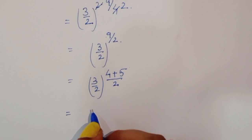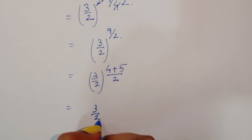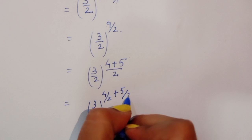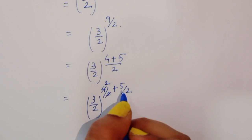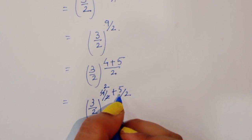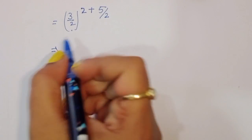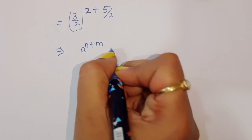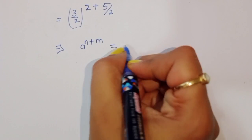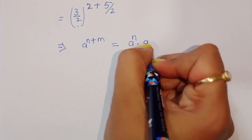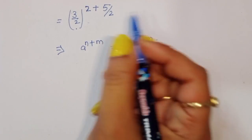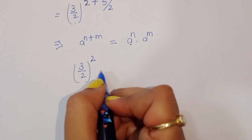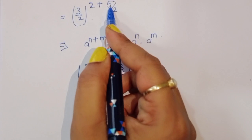So we can write 9 over 2 as 2 plus 5 over 2 — since 4 over 2 is 2. We know the formula a power (n plus m) equals a power n times a power m. Using this formula, we can write (3 over 2) raised to power 2 times (3 over 2) raised to power 5 over 2.